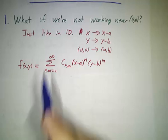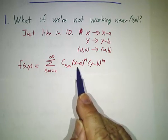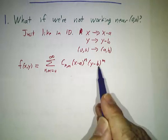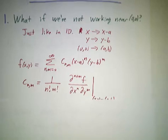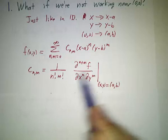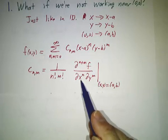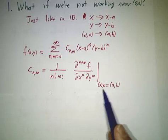In other words, we can write our function as a sum of c_nm, where n is now the number of powers of x minus a, m is the number of powers of y minus b. What's our coefficient? You divide by n factorial, m factorial, the n plus mth derivative with respect to x n times and y m times, evaluated at the point (a,b).